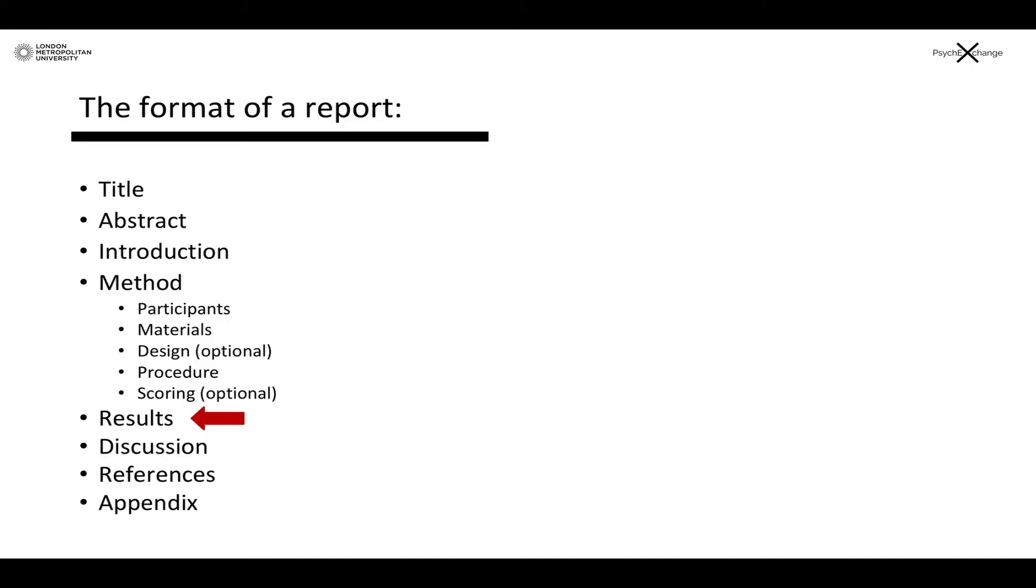Right, so just a quick reminder of the overall structure of a report. You've got the title, the abstract and the introduction, which were covered in the first video. And then you've got the method, which is made up of participants, materials, design, procedure and scoring, which were covered in the second video.